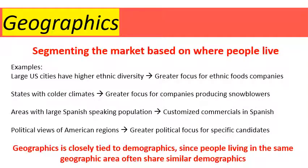The second way to segment a market is by geographics — segmenting the market based on where people live. Think of geography as a map and apply that to where people live, or their location. For example, large U.S. cities tend to have higher ethnic diversity, making them a greater focus for ethnic food companies. And states with colder climates are a greater focus for companies selling snowblowers — why promote snowblowers in Arizona where it never snows?